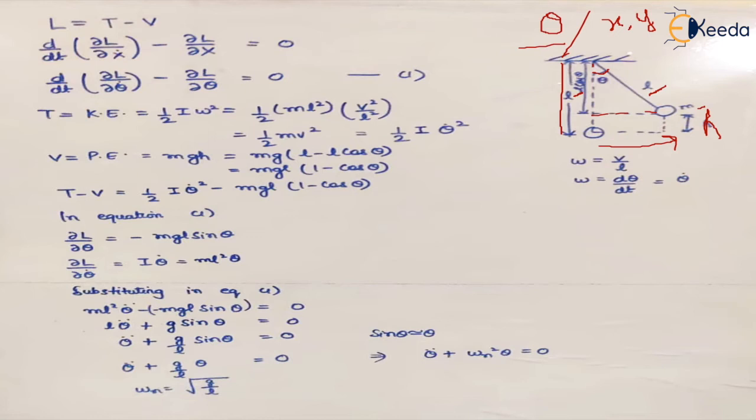Now we know the Lagrangian factor L is given by T minus V where T is the kinetic energy and V is the potential energy. The general equation of the Lagrangian formulation is given by this equation where the time derivative of differential of Lagrangian with respect to x dot minus the differential of Lagrangian with x equals zero. But in this case we are using the angle theta as displacement. So omega will become del theta upon del t that we are denoting by theta dot. So this is how the equation changes.